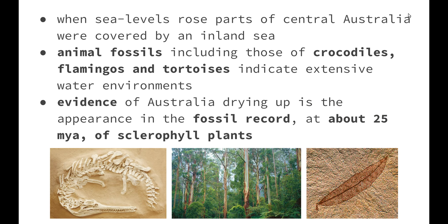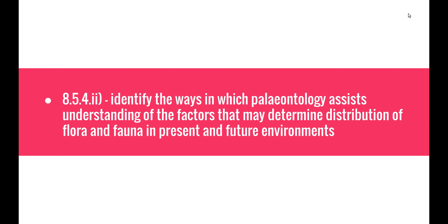When sea levels rose about 40 million years ago, parts of central Australia were covered by an inland sea. Animal fossils including those of crocodiles, flamingos, and tortoises indicated an extensive water environment. As Gondwana split up and Australia moved north the climate gradually became drier, with evidence appearing in the fossil record at about 25 million years ago of sclerophyll plants.